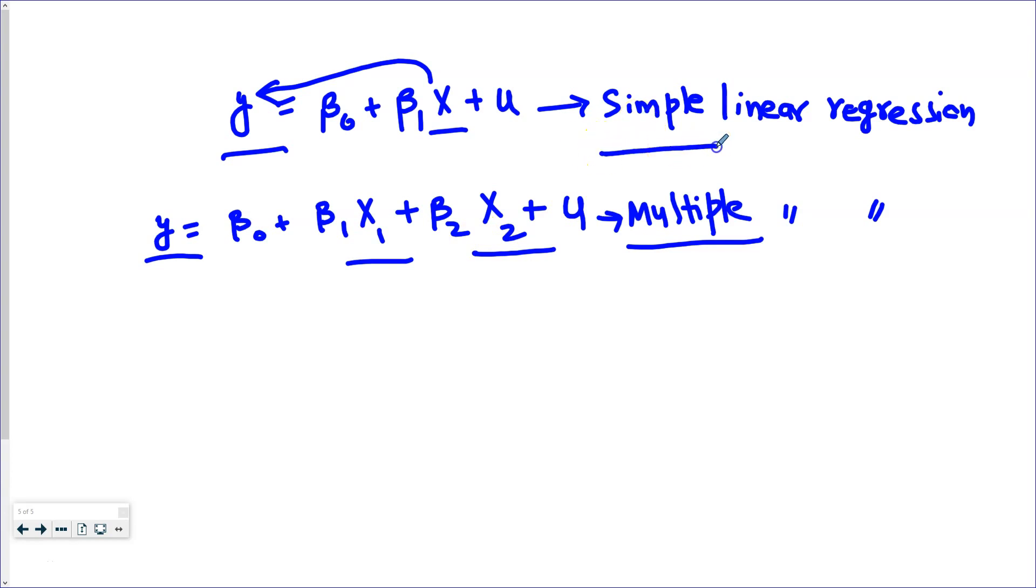In the case of a simple linear regression model, there was only one variable x that was explaining another variable y. But here, we are adding more x variables on the right hand side.